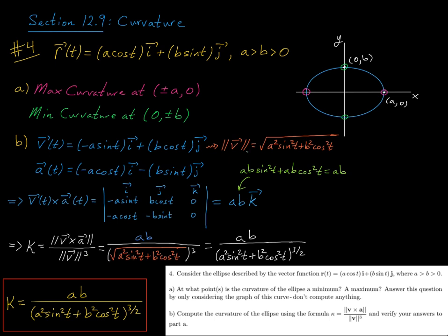Well, we note up here that the magnitude of v is the square root of the sum of the squares of the components of the velocity vectors, so that's the square root of a squared sine squared t plus b squared cosine squared t, and I have that expression cubed in the denominator.